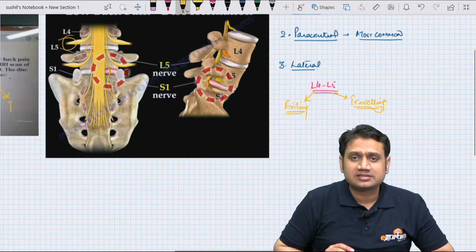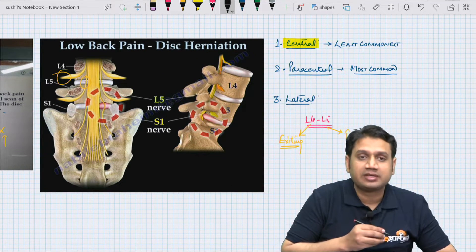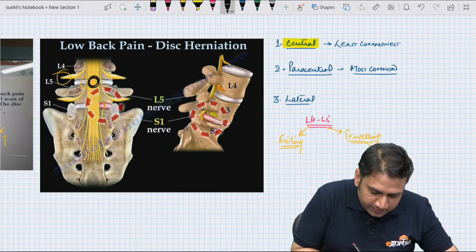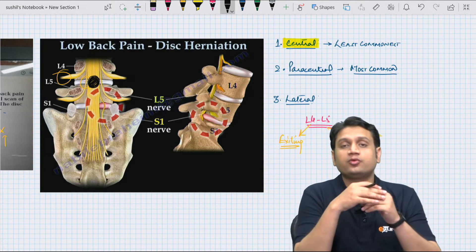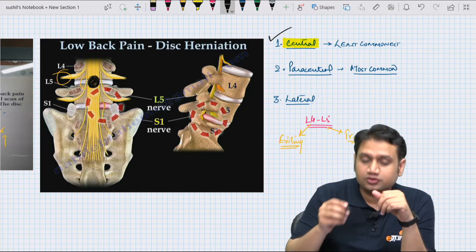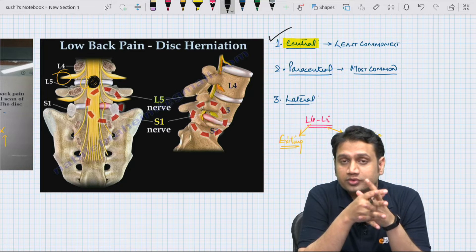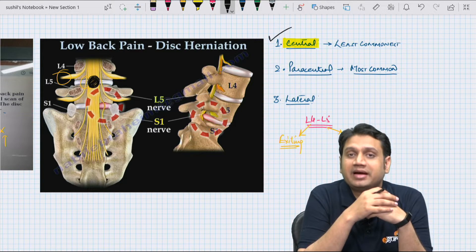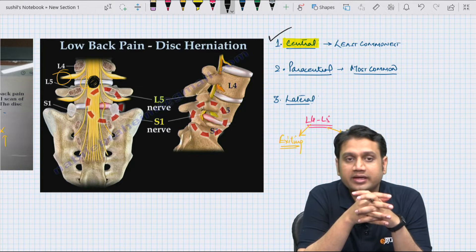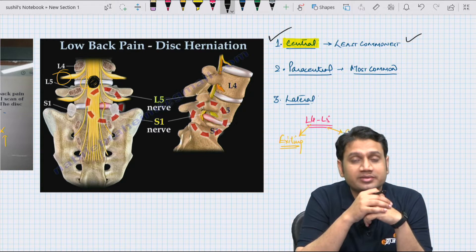If there is a central disc prolapse, central disc collapse will cause compression of the cauda equina. That is why you asked — why not cauda equina? It is because the central disc prolapse is the least common kind. In clinical practice, among patients with backache and radicular pain, very few progress to cauda equina syndrome. Cauda equina syndrome occurs only when there is a central disc collapse, which is the least common.